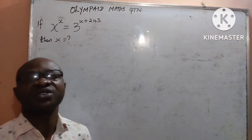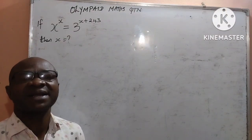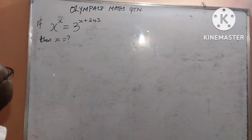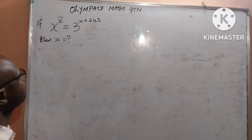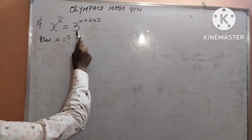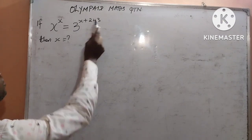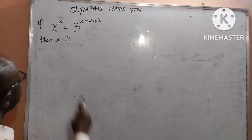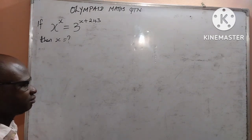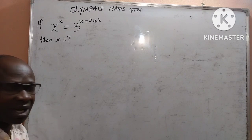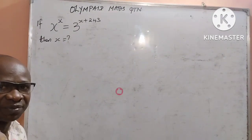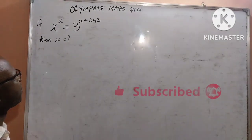Thank you, viewers. I am Tutor Ketisokoli. In our math class today, we shall be solving a prepared mathematics question. The question is given to us as written on the board: if x to the power of x is equal to 3 to the power of x plus 243, then we should find the value of x. We dive in. Watch the video to the end, and if it is your first time watching my video, subscribe to my channel for exciting videos.